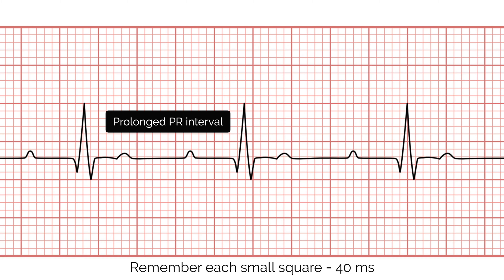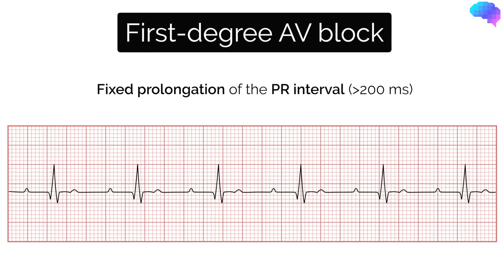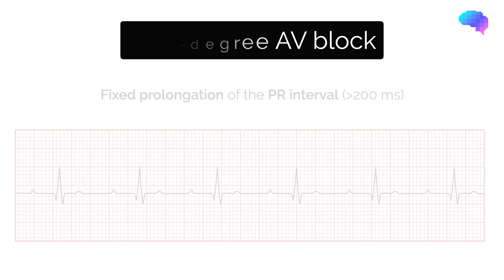This is unlike some other forms of AV block, which we'll discuss later. First degree AV block is common and can often be an incidental finding, with patients usually being asymptomatic.